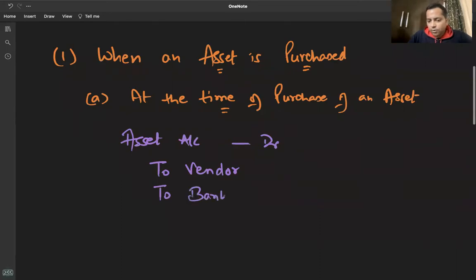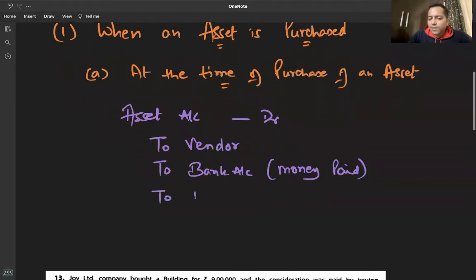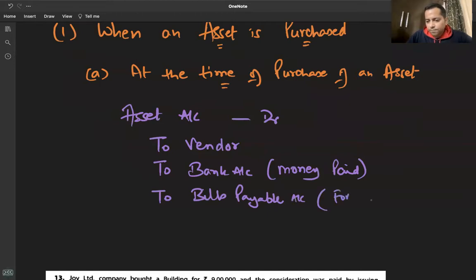तो क्या लिखेंगे उतने portion के लिए — 'To Bank Account' — money paid. और कभी-कभी होता है कि हमने कोई bills accept कर लिए तो क्या लिख देंगे — 'To Bills Payable' — for bills accepted.